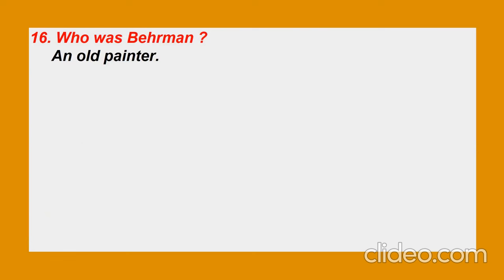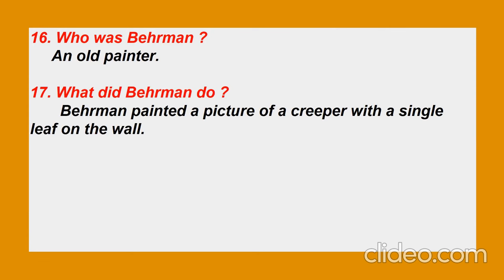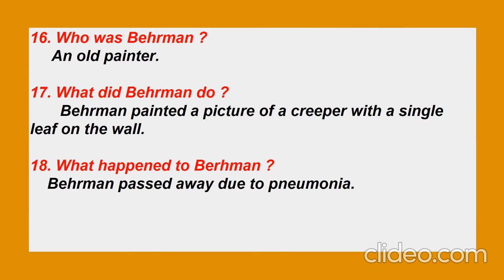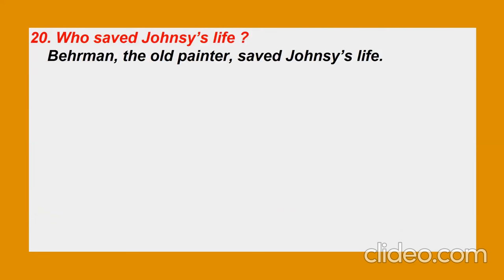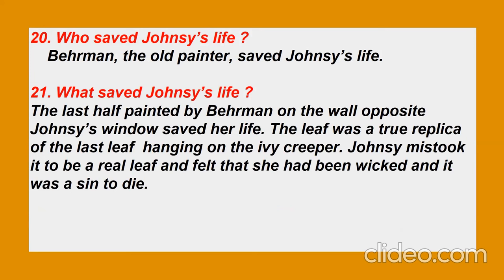Question sixteen: Who was Behrman? Behrman was an old painter. Question seventeen: What did Behrman do? Behrman painted a picture of a creeper with a single leaf on the wall. Question eighteen: What happened to Behrman? Behrman passed away due to pneumonia. Question nineteen: What was Behrman's masterpiece? His masterpiece was a painting of a creeper with a single leaf on it. Question twenty: Who saved Johnsy's life? The old painter Behrman saved Johnsy's life. Question twenty-one: What saved Johnsy's life? The last leaf painted by Behrman on the wall opposite Johnsy's window saved her life. The leaf was a true replica of the last leaf hanging on the ivy creeper. Johnsy mistook it to be a real leaf and felt she had been evoked, and it was a sin to die — so she got new energy and a new life.